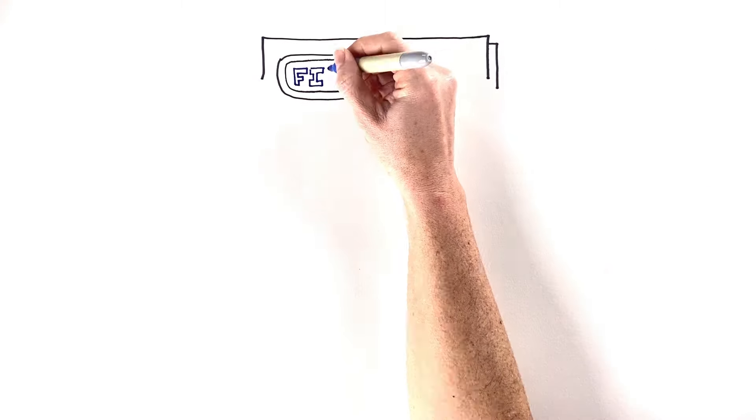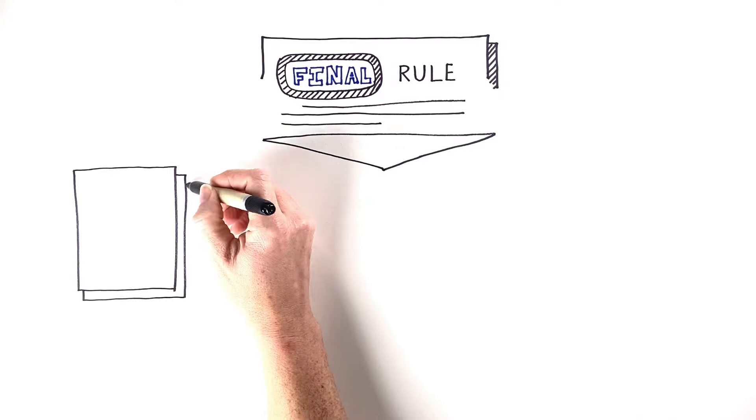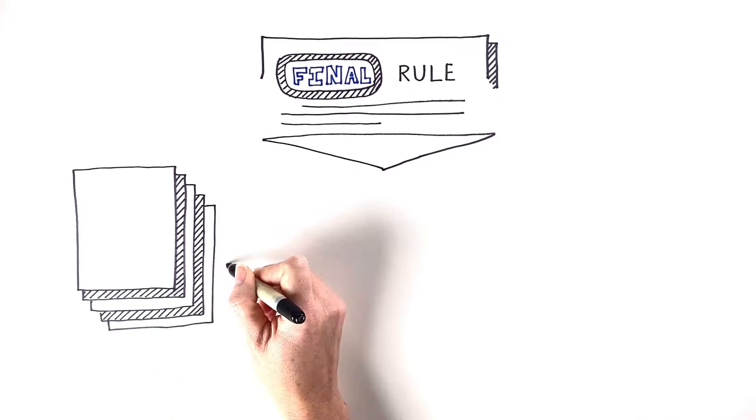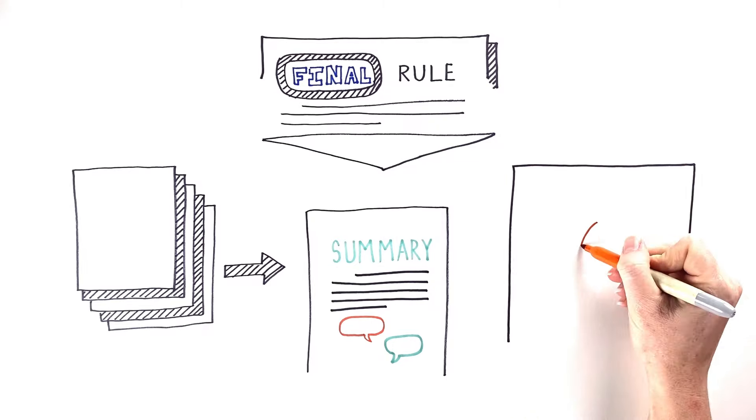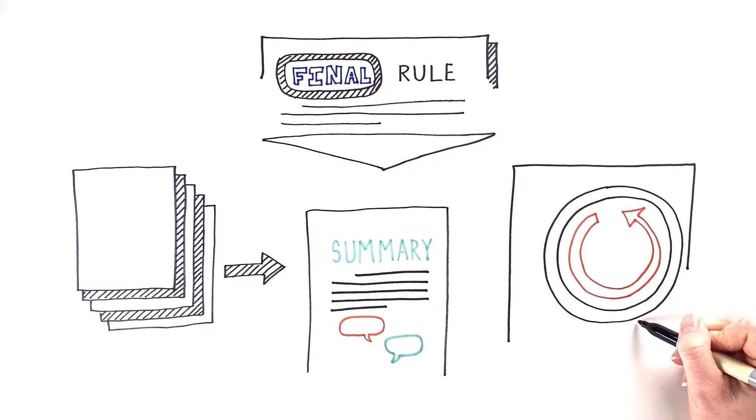When preparing a final rule, CTP will provide a summary of the public comments on the proposed rule and the agency's responses. CTP also must explain what, if any, changes were made to the rule as a result of those comments.